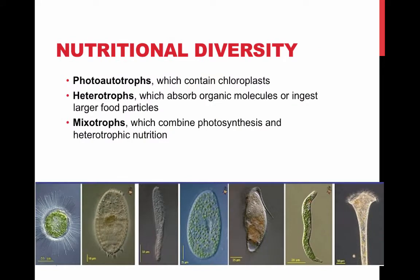Protists are the most nutritionally diverse of all eukaryotes. They include photoheterotrophs, which contain chloroplasts; heterotrophs, which absorb organic molecules or ingest larger food particles; and mixotrophs, which combine photosynthesis and heterotrophic nutrition.